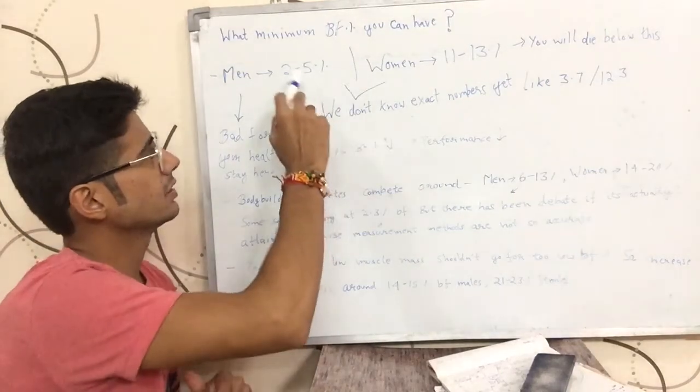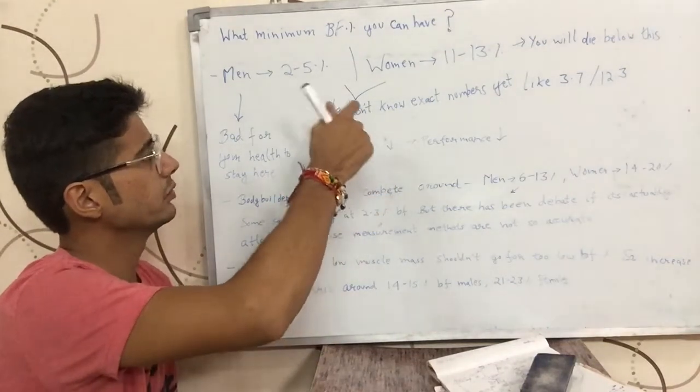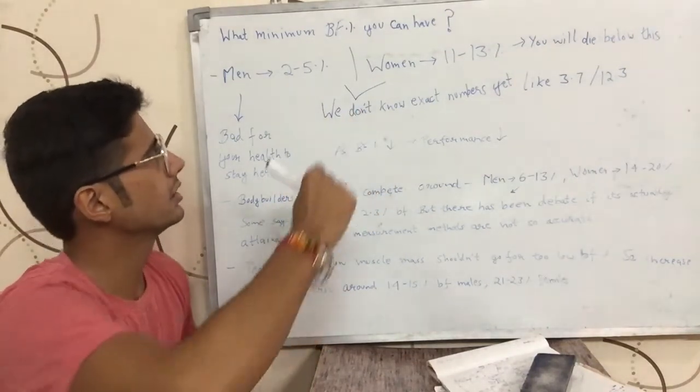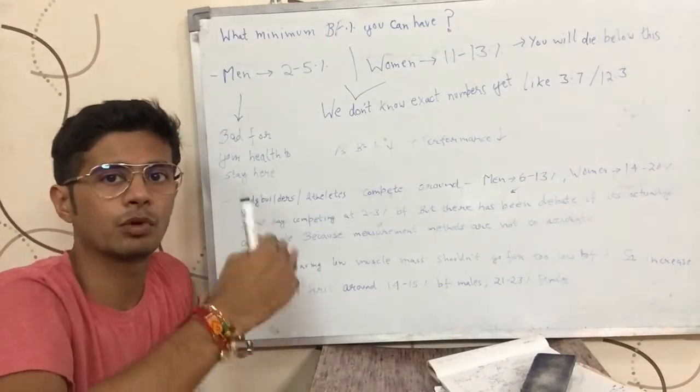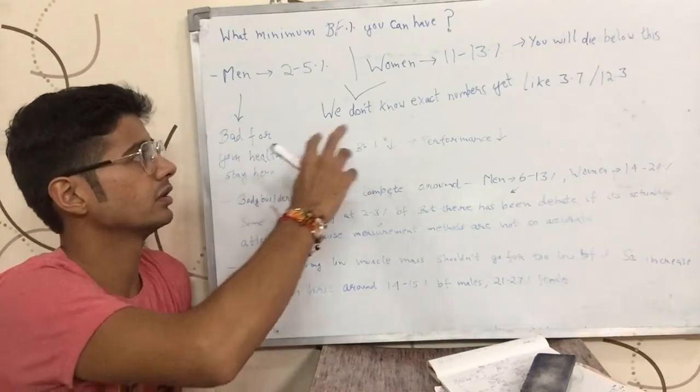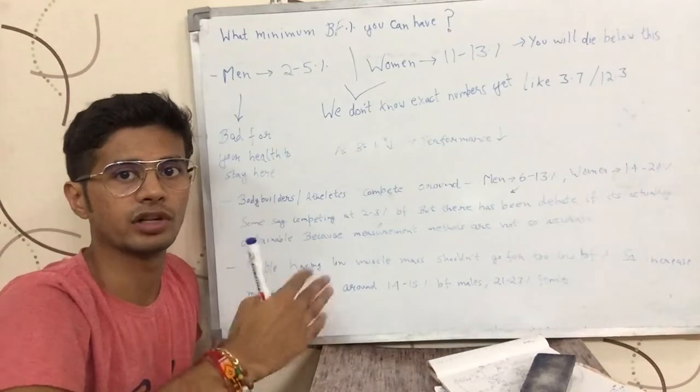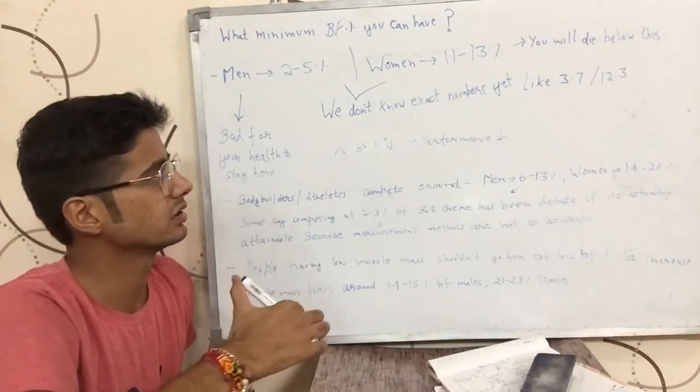Now if someone asks me what is the exact number in that range, we do not have the exact number like 3.7 is the minimum body fat percentage that a man can have below which he is going to die. We do not have such exact numbers like 12.3 for women. We do not have such exact numbers.